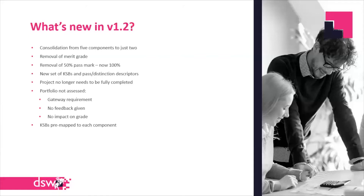The trailblazer group has reviewed it in line with more current policy from the Institute and reduced that to two methods. Within the two methods we have three separate components. The other key change is the grading has changed substantially — whereas before we had pass, merit, and distinction, we now just have pass and distinction, so the merit's been removed. Crucially, the pass mark has now been removed as a 50% threshold.